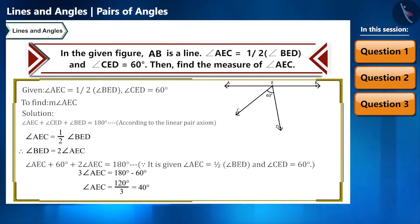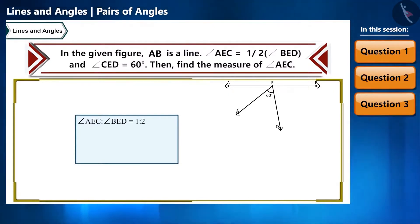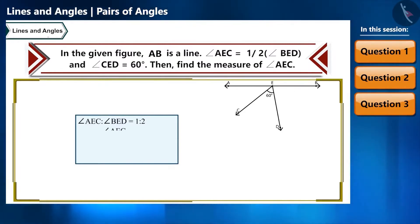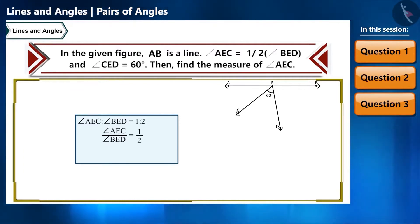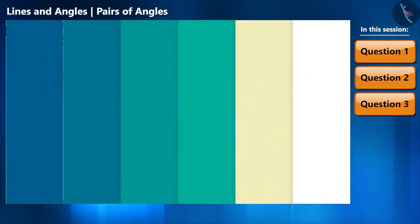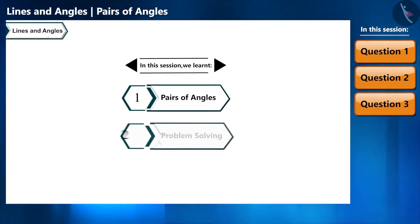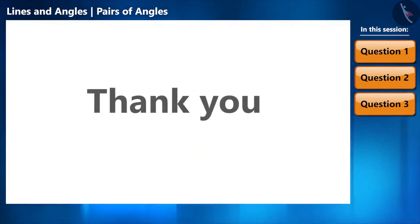Note: this question can also be given as angle AEC to angle BED equals 1 to 2, which means angle AEC equals half of angle BED — the same relationship. A question can be given in different ways; we must not lose focus on the properties. Today we solved some questions related to pairs of angles. Thank you.